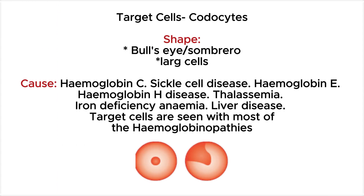Target cells are characterized by hemoglobin being centrally located in the cell and surrounded by pallor. This morphological change gives it a bullseye or sombrero shape. These cells are usually larger than normal erythrocytes due to excess cell membrane. This is seen in hemoglobin C, sickle cell disease, hemoglobin E, hemoglobin H disease, thalassemia, iron deficiency anemia, liver disease, and most hemoglobinopathies.